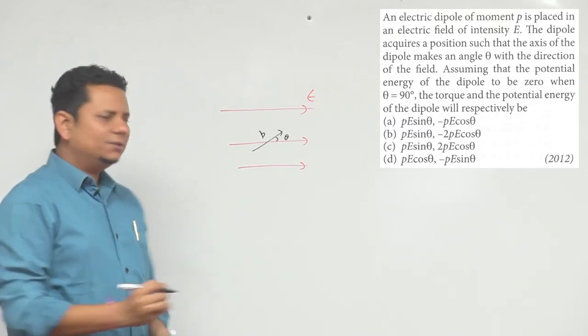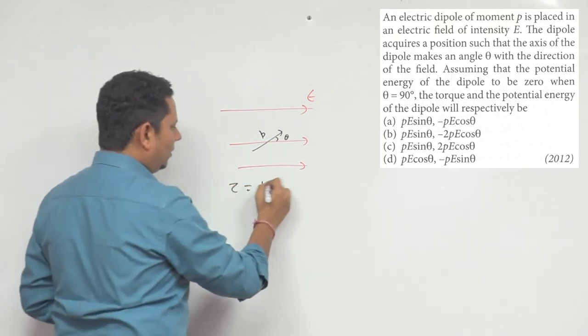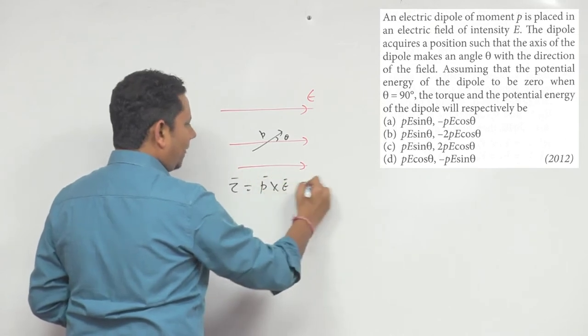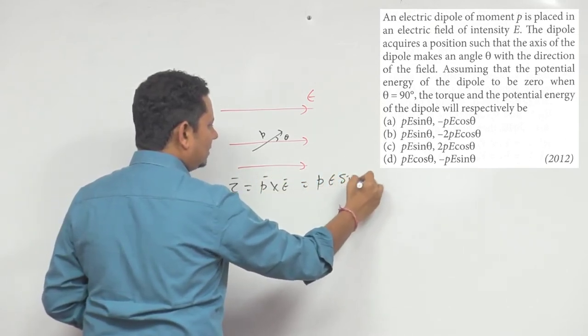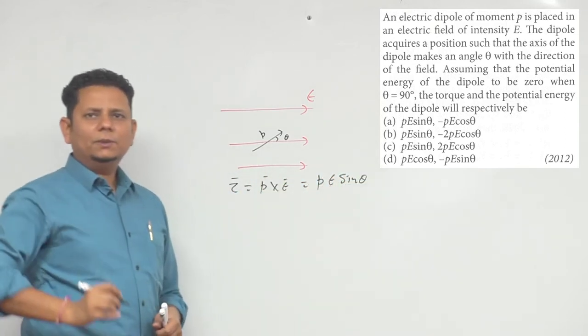In this case, the torque we write will be equal to P cross E, and we can write this as P E sin theta. And here, the potential energy...